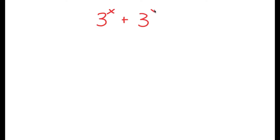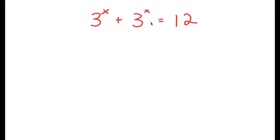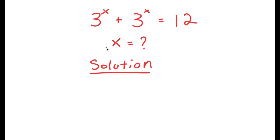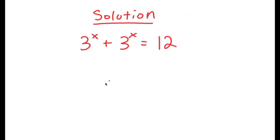In this video, I'm going to solve the equation 3 to the power of x plus 3 to the power of x is equal to 12. My only variable is x, so that's what I'll be solving for. I have 3 to the power of x plus 3 to the power of x equals 12, and I'm first going to factor out 3 to the power of x. So I get 3 to the power of x times 1 plus 1, equals 12.